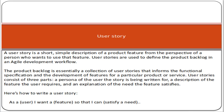In the scrum framework there is a concept of a user story. A user story means the functional requirement or a requirement of a customer. For example, if you are implementing an e-commerce solution and the customer wants users to be able to pay by credit card — that is a customer requirement or functional requirement. A user story is a short, simple description of a product feature from the perspective of a person who wants to use that feature. User stories are used to define the product backlog in an agile development workflow. The product backlog is like a scope document that contains all the user stories or functional requirements of a customer for the product.